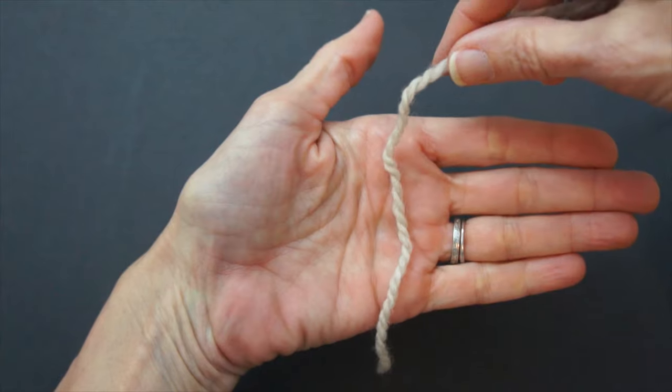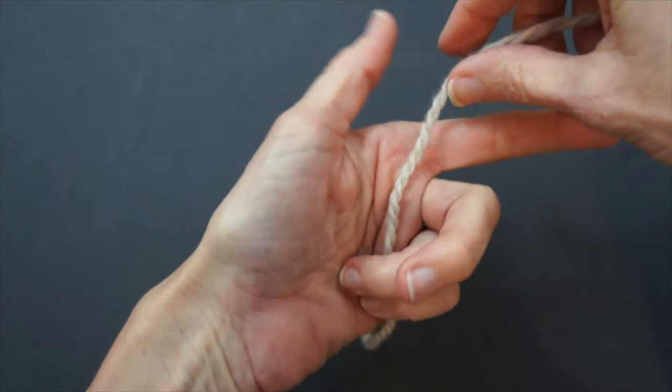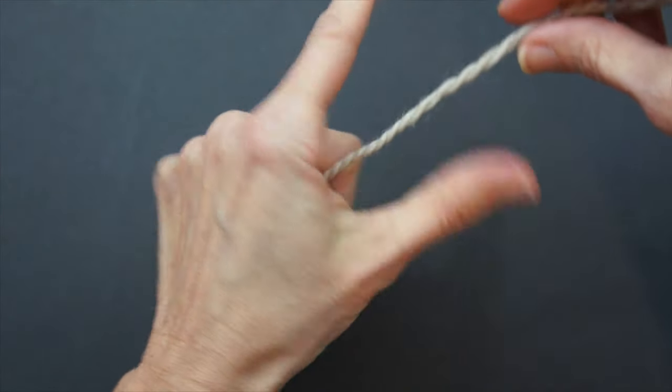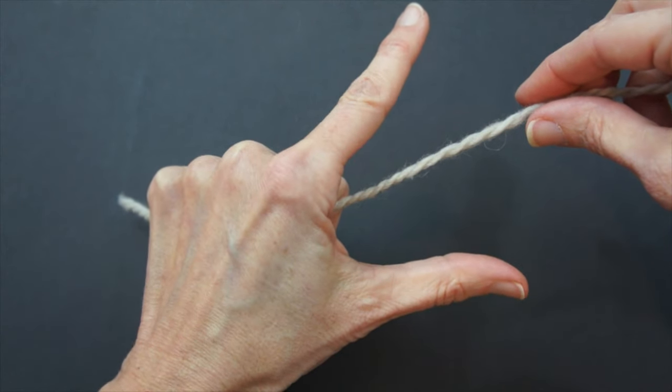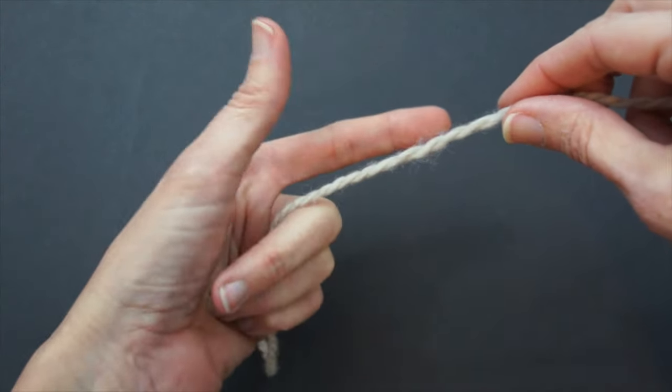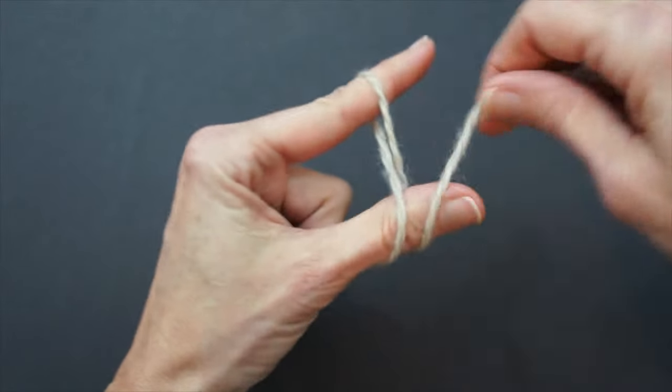So you can clean that up by laying the tail over your palm and just holding it with your fingers and putting your thumb and index finger in the little seven position and just start to butterfly around.